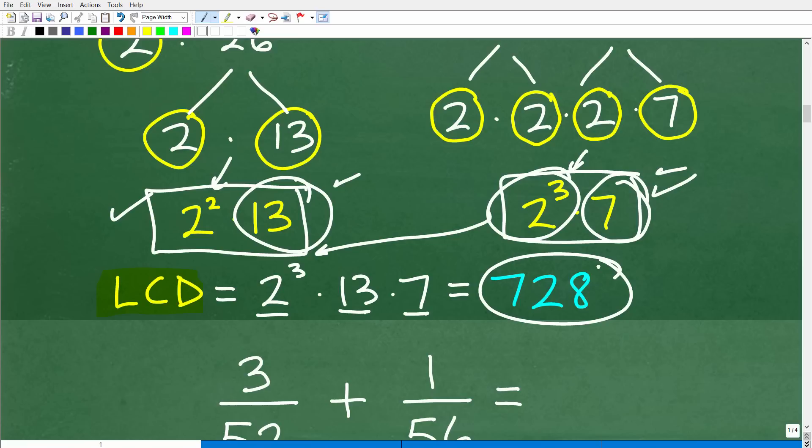I need a 13 in my LCD. I'm going to need a seven, each of these unique prime factors. And notice I have two squared and I have two to the third. So I don't need to have both a two squared and two to the third in my LCD. It's just the highest power of that number. So now I have two cubed times 13 times seven. Two cubed is eight, eight times 13 times seven is 728. So this is a quick little review of how to find the LCD.